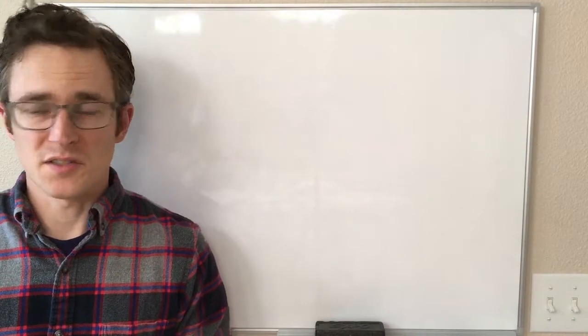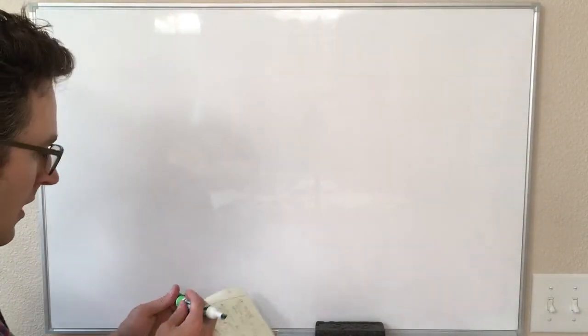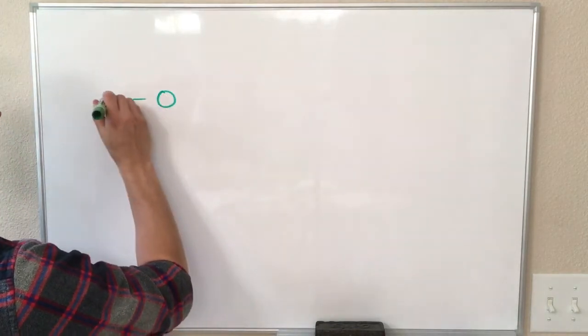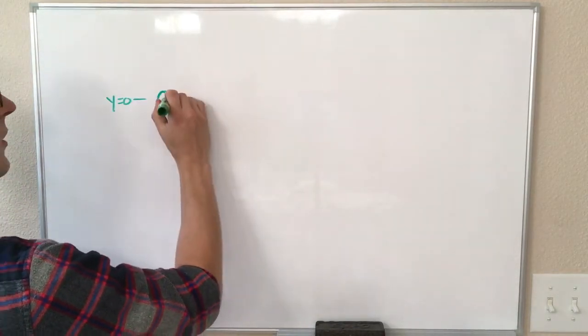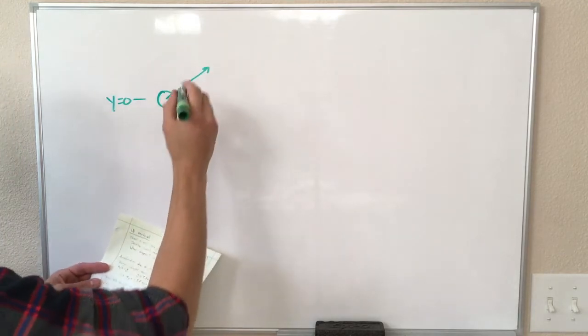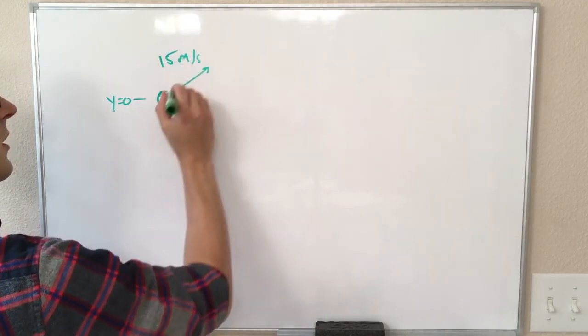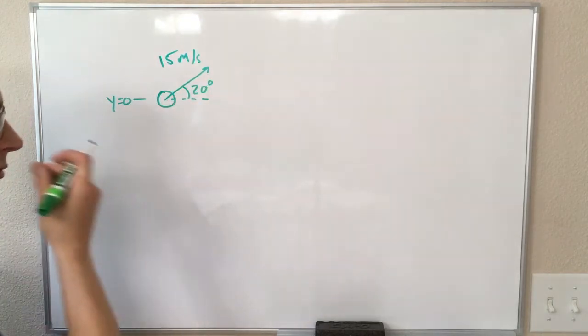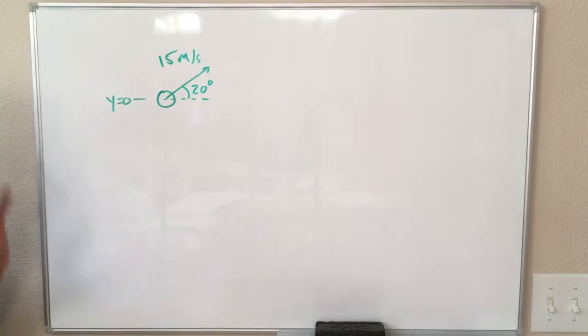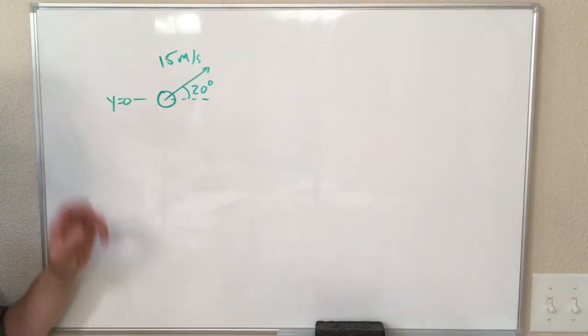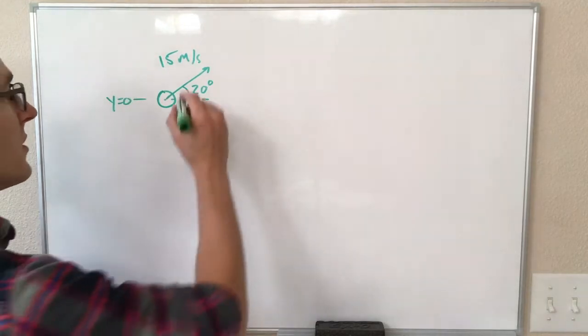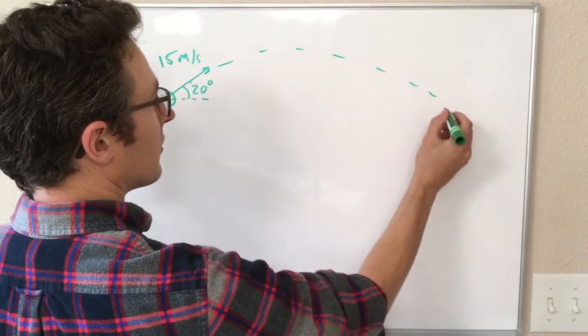All right, now we're going to do a kinematics example problem. Let's say we have a ball that starts at a height of y equals zero, and it is given an initial velocity of 15 meters per second and is thrown at an angle that is 20 degrees above horizontal. We could write all this in words, but I'm going to draw a picture instead. So we know that it is going to follow some path that looks like this.